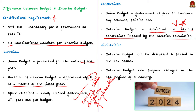Finally, let us conclude with the similarities between the two: both a full budget and an interim budget are discussed and passed in the Lok Sabha, and an interim budget can also propose changes in the tax regime of a country. These are the key points to remember about the differences and similarities between an interim budget and a union budget. With these learned points, let us move on to the next news article discussion.